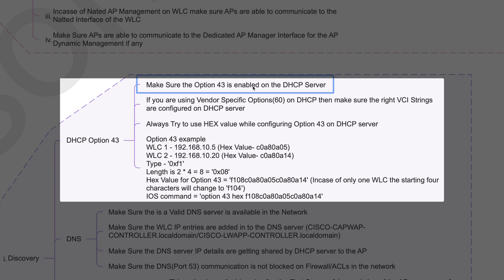You can apply the VCI string under vendor-specific options in Option 60, so only those particular AP models will receive the WLC IP address. For example, in the same network you can provide legacy APs one controller and newer APs another controller using VCI strings. For the hexadecimal value — you can provide an IP address or a hexadecimal value. Personally, I prefer to configure the hexadecimal value. You should know how to configure that on your DHCP server, as the process differs between Windows and other OS types.